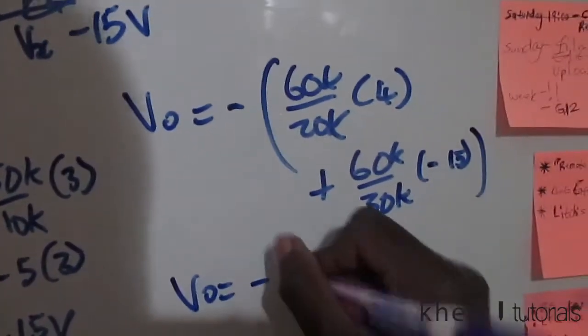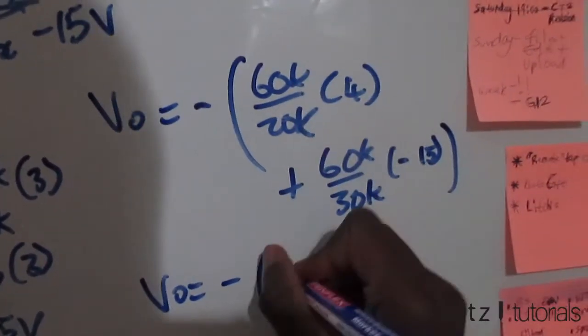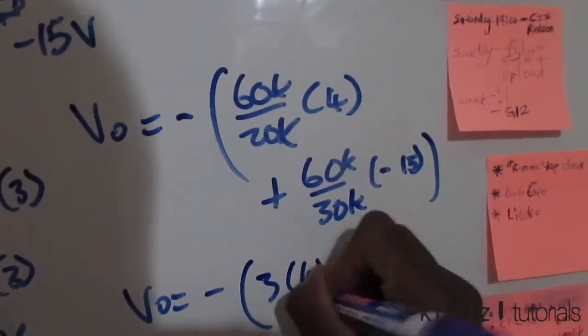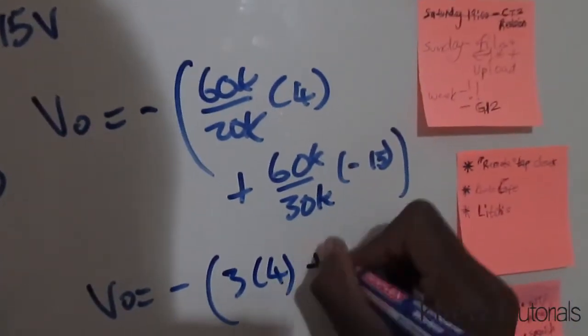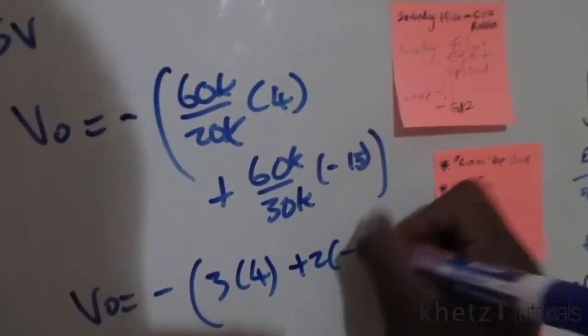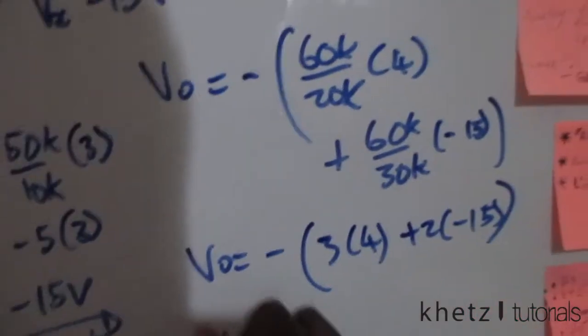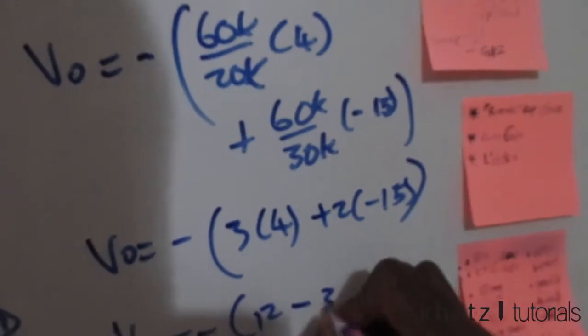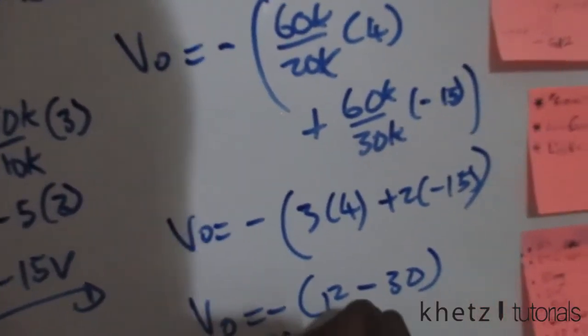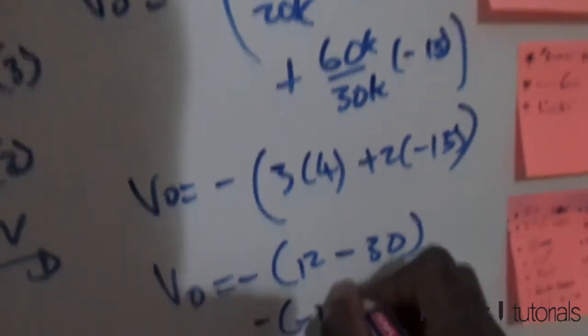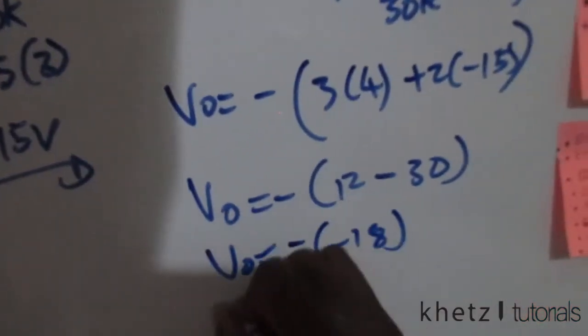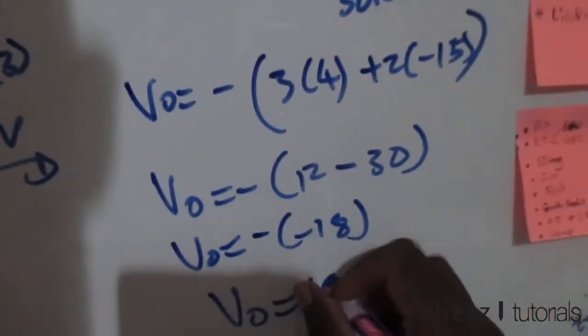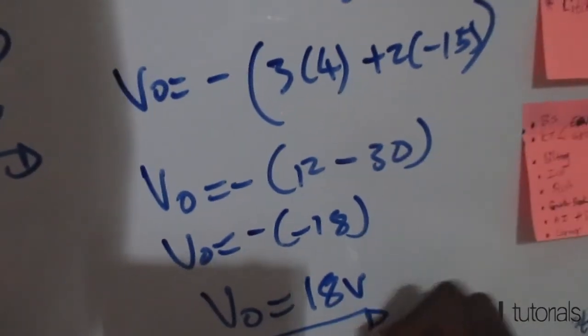Now punching that into your calculator or just simplifying, we're going to have 60 divided by that so we're going to have 3 multiplied by 4, we're going to have 2 multiplied by that. So VO equals negative 12 negative 30 so this is negative 18, so negative negative 18 is going to give you a value of 18 volts and that is your value for VO.